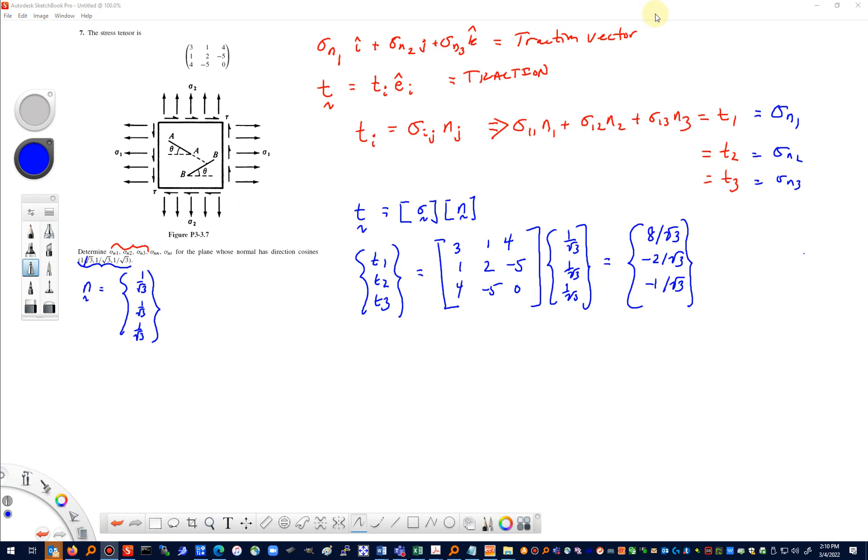This is what I got for the three traction vector components: 8 over the square root of 3, minus 2 over the square root of 3, and minus 1 over the square root of 3.